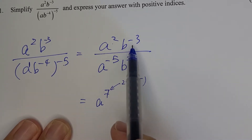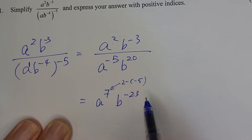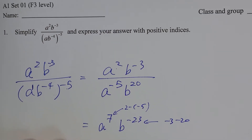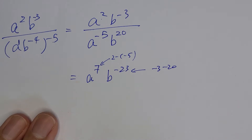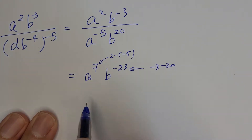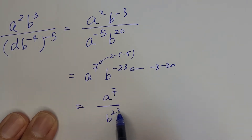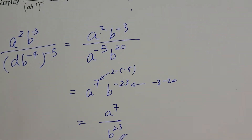For b: b to the power of negative 3 over b to the power of 20 gives b to the power of negative 23, since negative 3 minus 20 equals negative 23. But don't forget you need to express your answer with a positive index, so change b to the power of negative 23. Hence your final answer is a to the power 7 over b to the power 23.